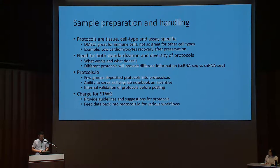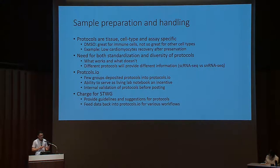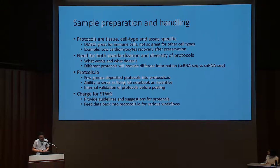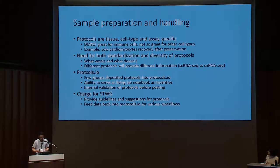We ended up with a few charges for the STWG. Rather than having the standards technology and working group develop one protocol for every tissue, they should provide guidelines — if certain workflows won't work for a particular tissue, informing people before they start is valuable — and provide suggestions especially for hard-to-work-with tissues. Holger also suggested taking data from comparison publications and putting that back into Protocols.io as a more quantitative way of measuring how a particular protocol performs compared to another.